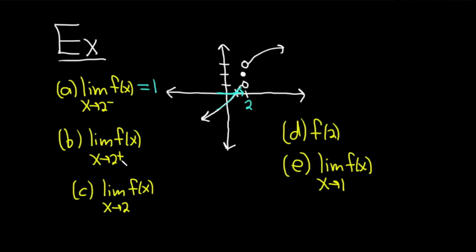Likewise, if we approach 2 from the right, we ask ourselves: what happens when x gets infinitely close to 2 from the right? The y value gets infinitely close to 3. So the answer is 3 in this case.